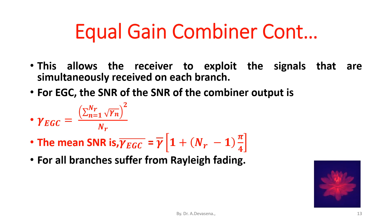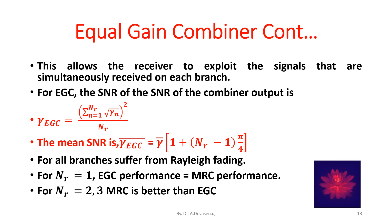For all branches suffer from Rayleigh fading, for N_R is equal to 1, the equal gain combiner performance is equal to maximum ratio combiner performance. For N_R is equal to 2, 3, the maximum ratio combiner is better than equal gain combiner method.